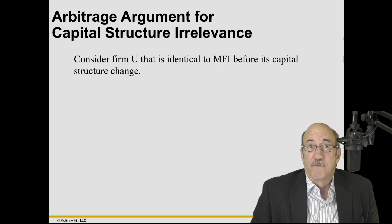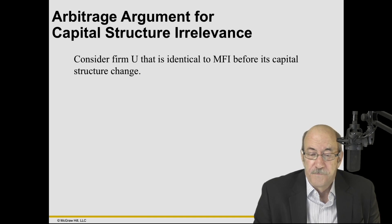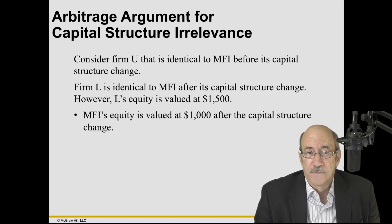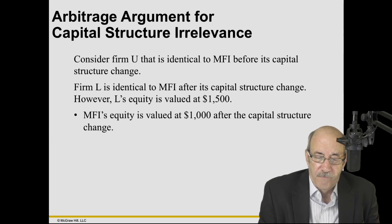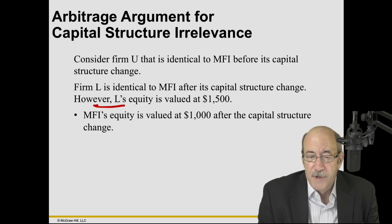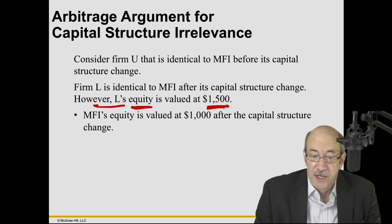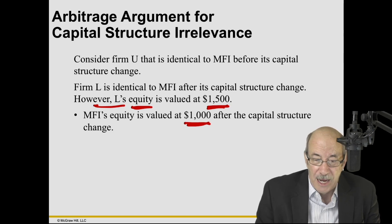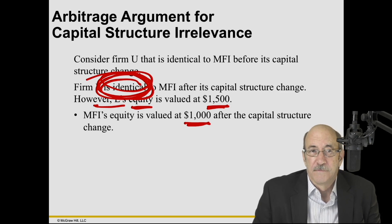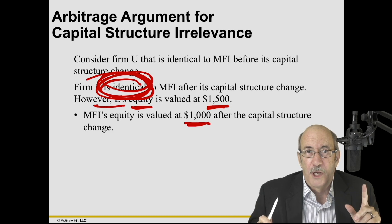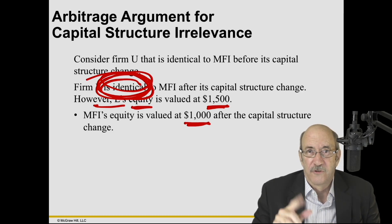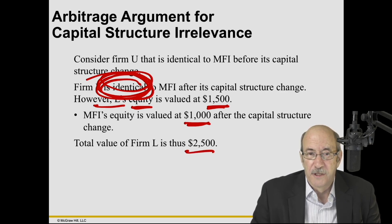Consider another firm. We have MFI, and now we have another firm called U. Firm U is identical to MFI before the capital structure change; Firm L is identical to MFI after the capital structure change. However, Firm L has equity valued at $1,500, whereas MFI's equity is valued at $1,000. Remember, they're identical — that can't be. It goes away through an arbitrage. Firm L's total value is $2,500 because its equity is $1,500.